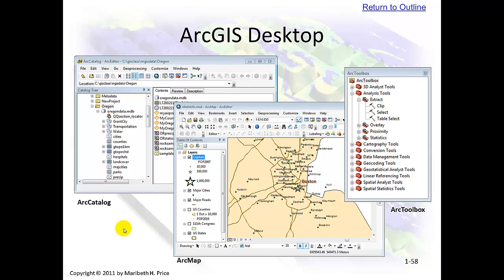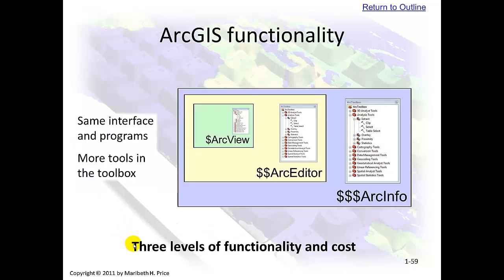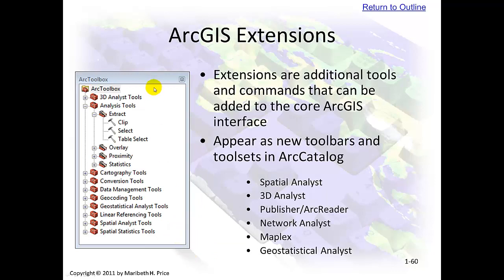Functionality. ArcInfo is what we're using — it's the most expensive and the full program. ArcEditor is a little smaller, and then there's ArcView. They've changed the names since 2011: this is now Basic, this is Intermediate, and this is Advanced. Extensions include Spatial Analyst, 3D, Network Analyst, Geostatistical Analyst, and several others. They'll show up on your toolbar; if you get a notice that you're not authorized to use a tool, you have to go up and authorize it yourself, as they're not automatically turned on when installed.